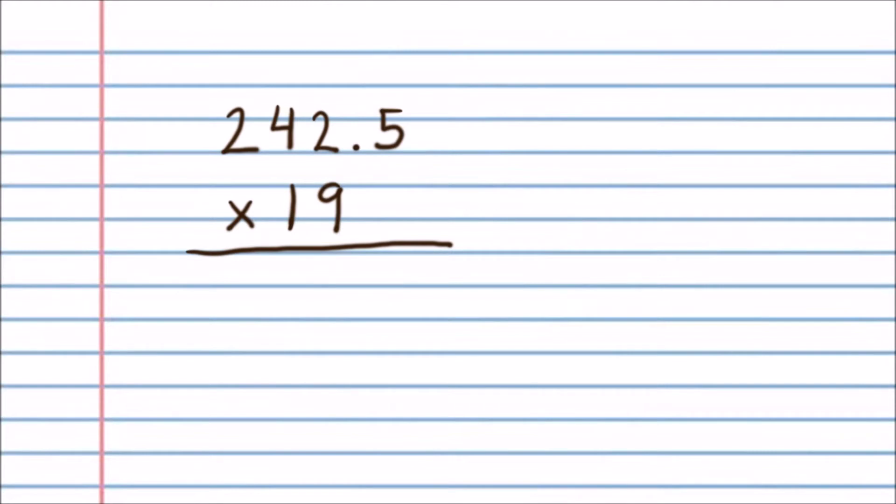So for example, this top number has one, two, three, four significant figures. The bottom number has one, two significant figures. That means the final answer is only allowed to have two significant figures.